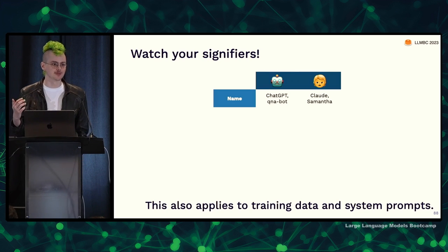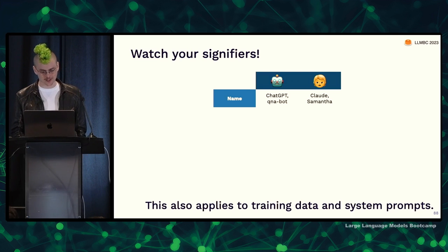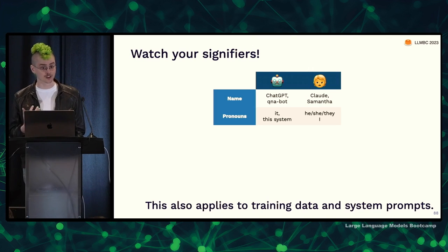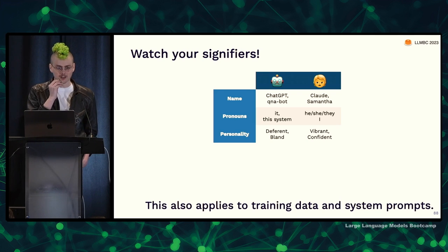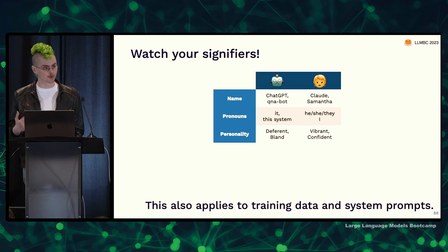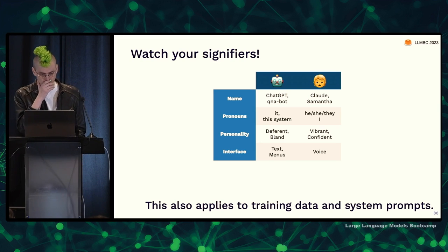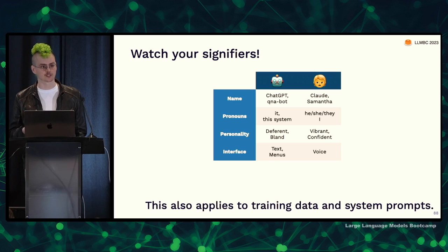You should do the opposite — your users will try to push the system and get frustrated when it's not human. The model itself — RLHF agents seem to get frustrated and confused when they realize they're not actually humans. Some suggestions: for a name, don't pick a human name like Claude or Samantha — pick something like ChatGPT, Q&A Bot, or even Bing Chat. For pronouns, it's a good idea to have the system refer to itself as 'this system' or 'the system' rather than 'I.' In terms of personality, the more vibrant and dynamic, the more people presume there's a person behind it. As for interface, sticking to text and menus signifies machine-ness; using voice signifies humanity.